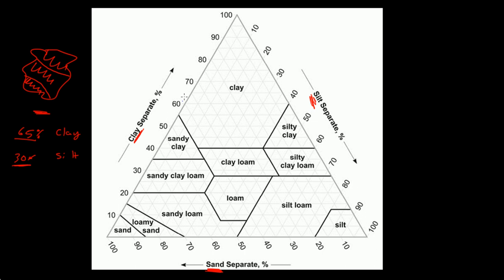These numbers are horizontal, so you read the clay percentage horizontally. 65% would be somewhere over here. I'm going to draw a line from here to here. So, 65% clay.